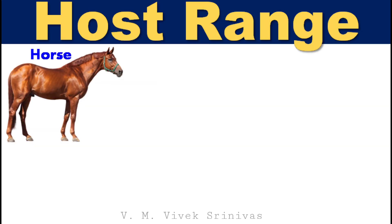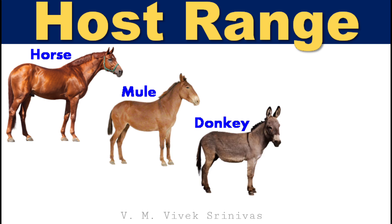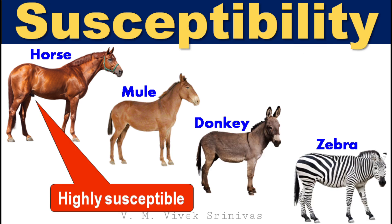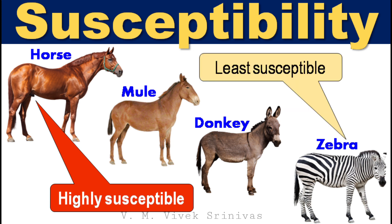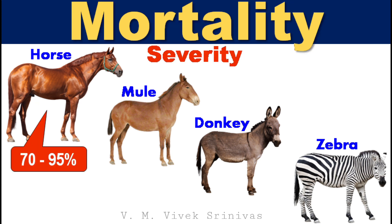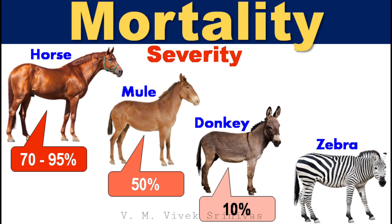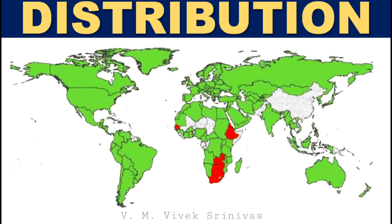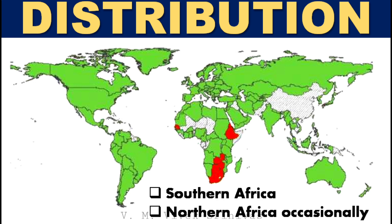Host range. Apart from horses, this virus also infects mules, donkeys, and zebras. Horses are highly susceptible for this infection, followed by mules, donkeys, and zebras, which are least susceptible. Similarly, high mortality rate is seen in horses, followed by mules and then donkeys, but mortality is rare in zebras. This infection is prevalent in southern Africa and northern Africa occasionally.